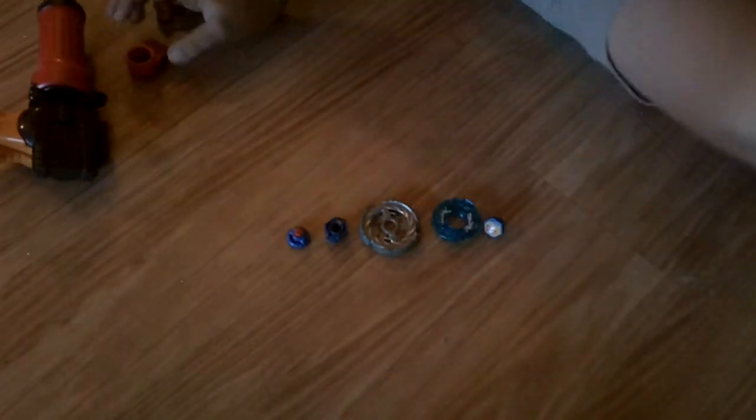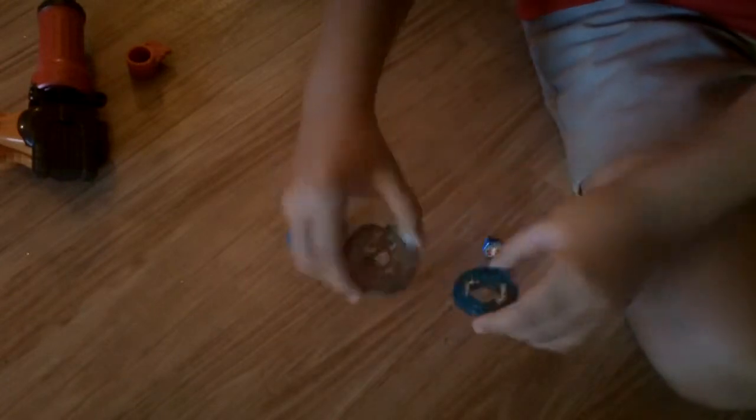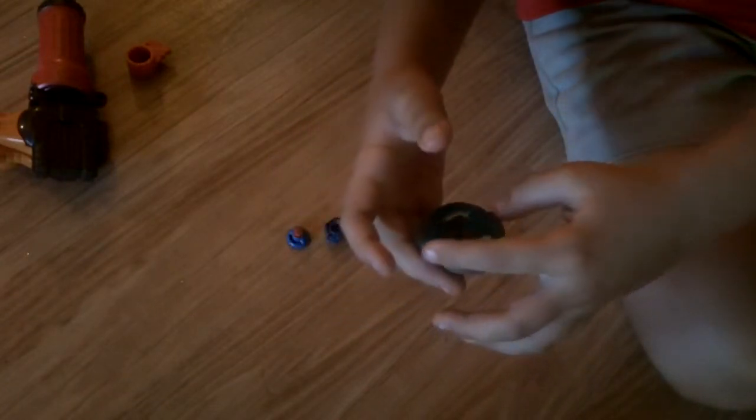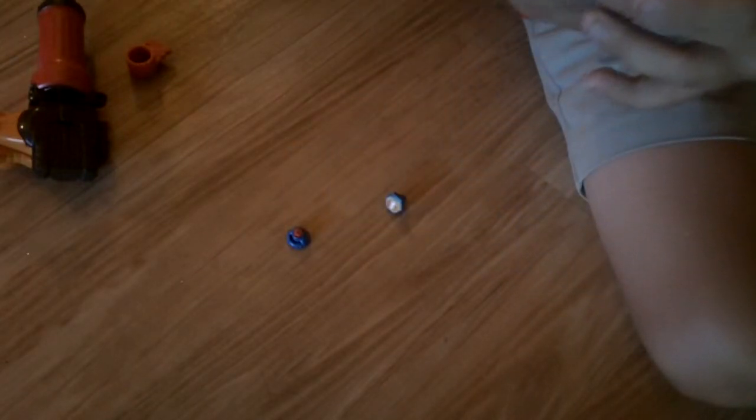Now, first things first. These bolts. Well, first, you have to put the metal wheel and the fusion wheel together. And then, you put the track in. Like so.